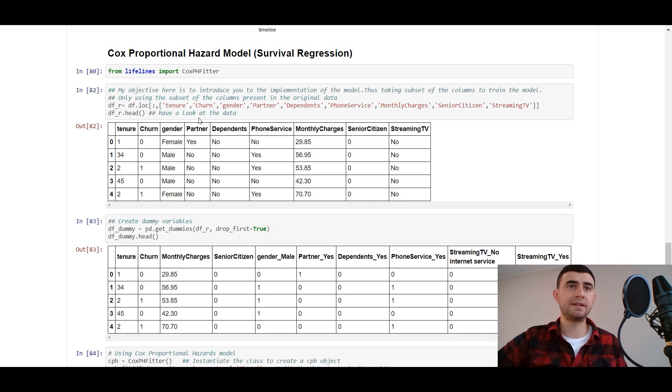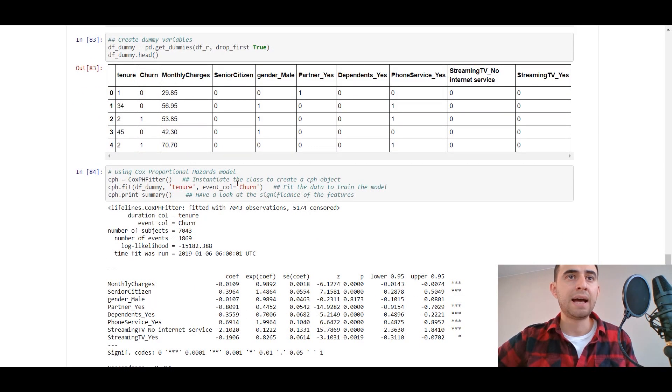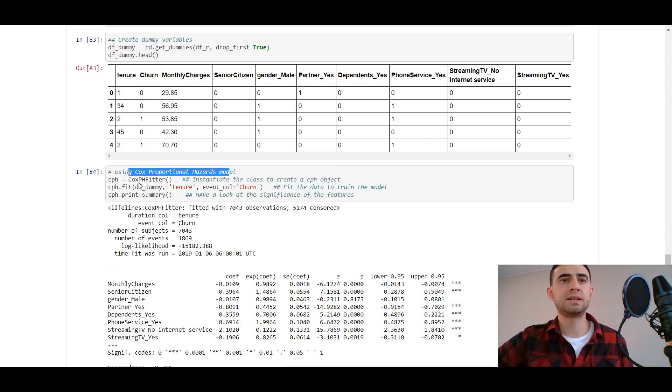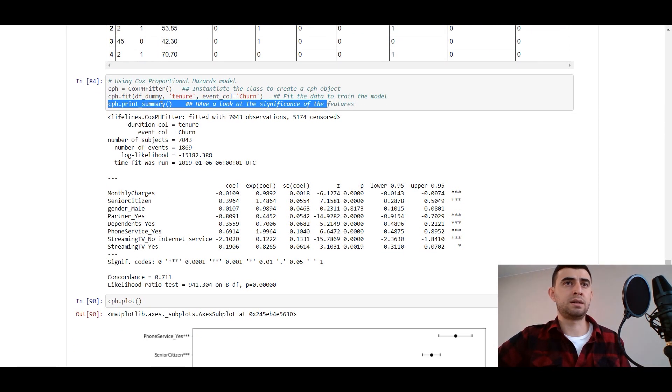We can take these columns that we are interested in: gender, partner, dependents, phone service, monthly charges, senior citizen, streaming TV, and see the influence on the churn rate. First of all we need to create dummy variables from the yes or no, from the binary data. Then we can use Cox proportional hazard model, just take the fitter, fit it to the data.